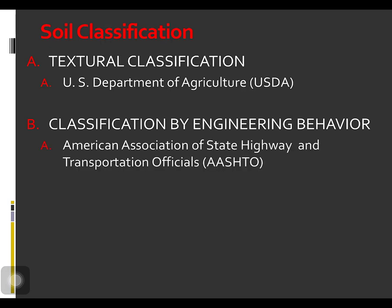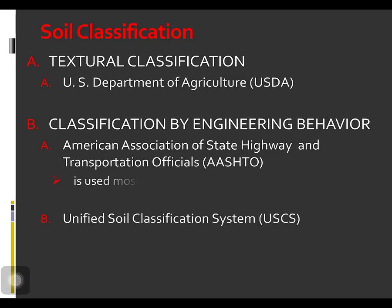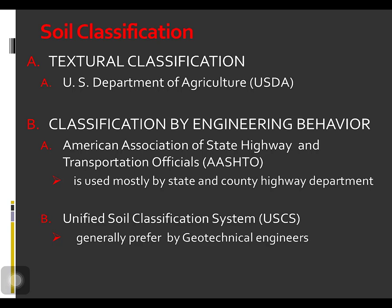They are the American Association of State Highway and Transportation Officials or AASHTO classification system and the Unified Soil Classification System or USCS. The American Association of State Highway and Transportation Officials Classification System is used mostly by state and county highway departments, while the USCS is generally preferred by geotechnical engineers.